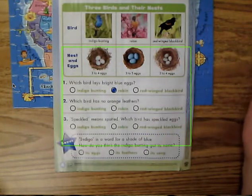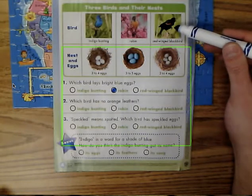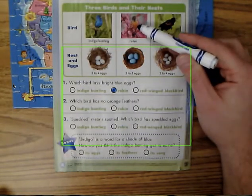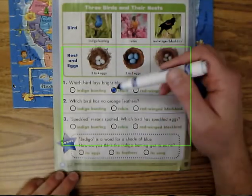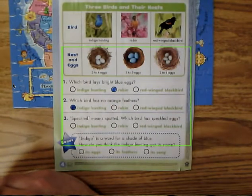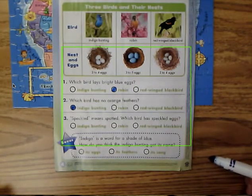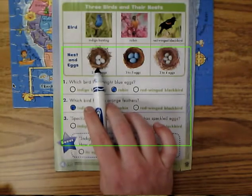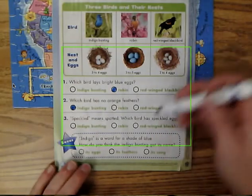Which bird has no orange feathers? It's a little trickier. The red-winged blackbird's look pretty orange, the robin's whole chest is orange — but the indigo bunting, I don't see any orange. So the indigo bunting has no orange feathers. Number three: speckled means spotted — which bird has speckled eggs? Those don't look spotted, those don't either, but these are spotted — so that is the red-winged blackbird.